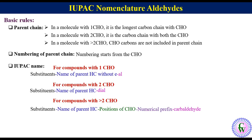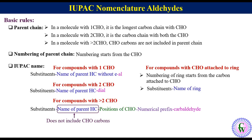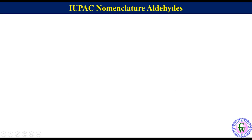Note that when the name contains 'carbaldehyde', the parent chain does not include CHO carbons. For compounds with CHO attached to a ring, numbering starts from the carbon attached to CHO, and the IUPAC name consists of substituents + name of ring + 'carbaldehyde'.